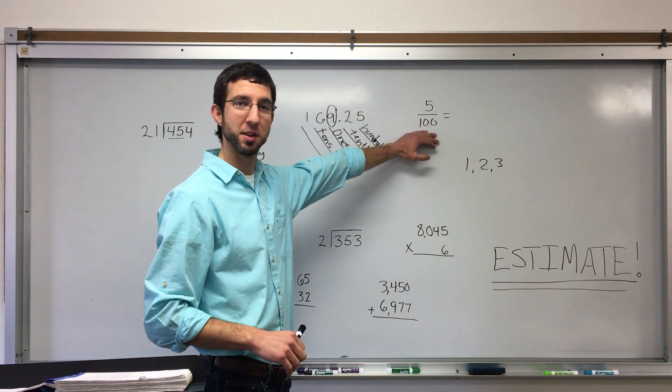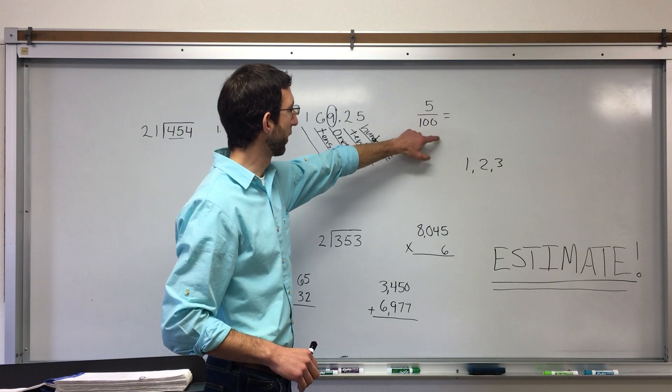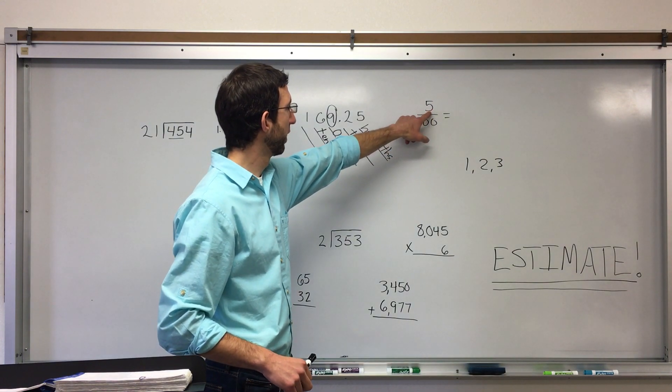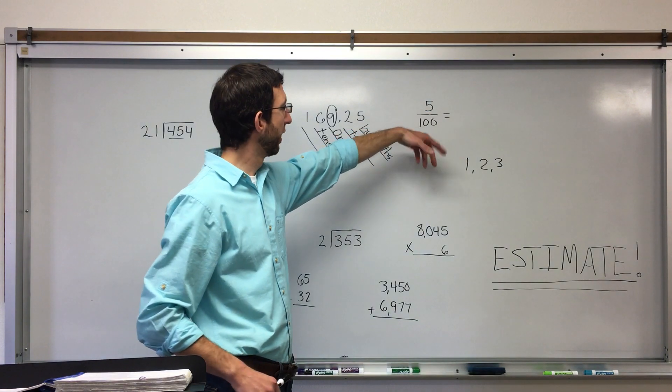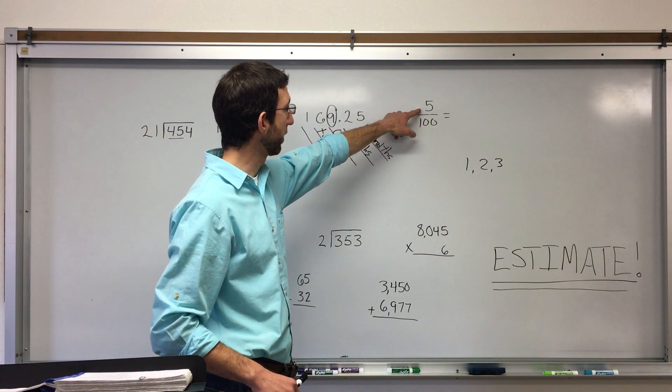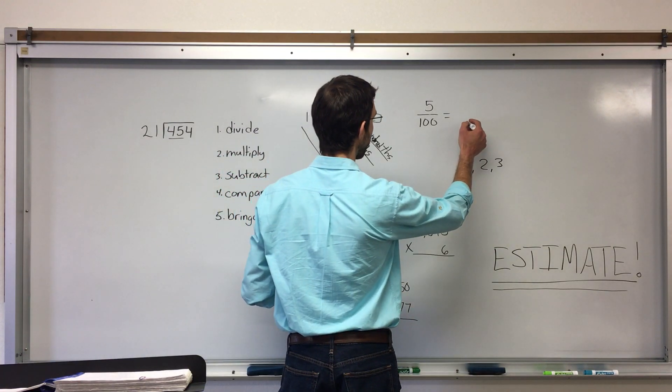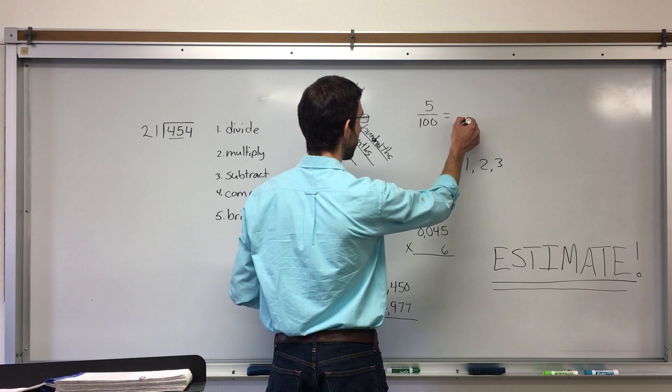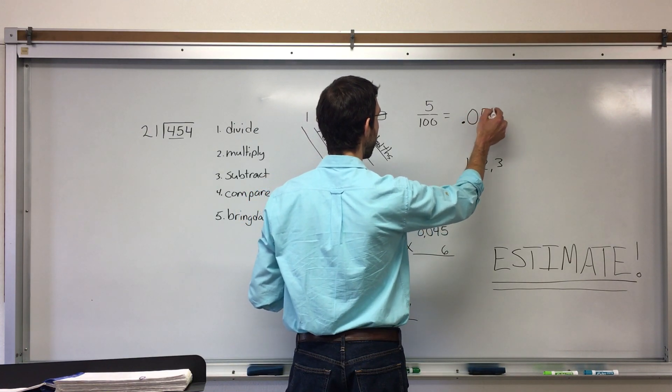So, when you change something like this to a decimal, look at the denominator, that tells you where the last figure up here goes. And, of course, there's only one figure up here in this illustration, so the five goes in the hundredths place. That means a decimal point and a zero to get us to the hundredths place, and then the five.